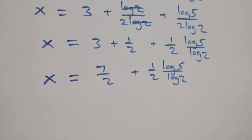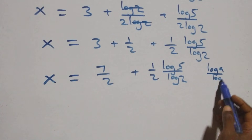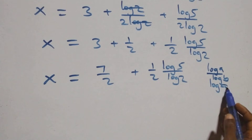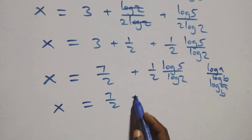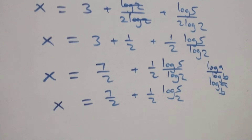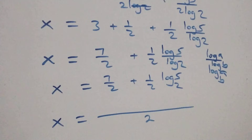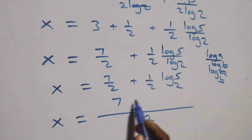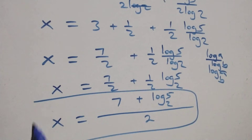Applying the change of base formula — where log a over log b equals log a to base b — we get x equals 7/2 plus 1/2 times log 5 base 2. Therefore x equals (7 + log₂5) / 2. This is the value of x.